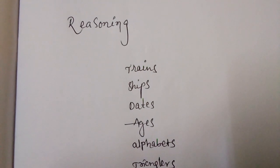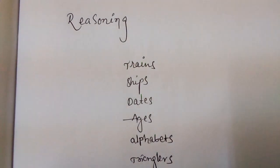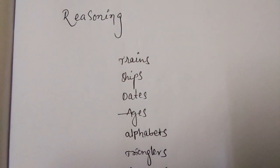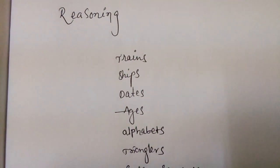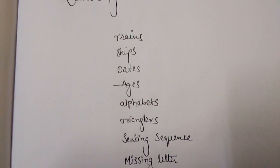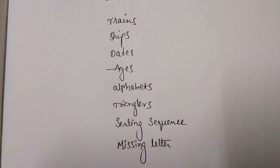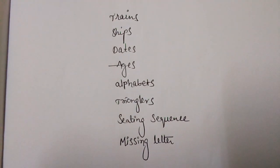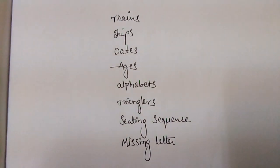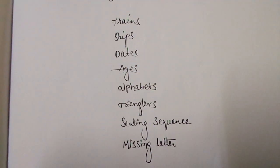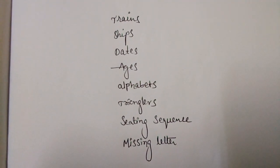From a reasoning point of view, topics include trains, ships, dates (calendar), ages, alphabets, triangulars, seating sequence, and missing letters. Definitely two or three questions are framed from reasoning.